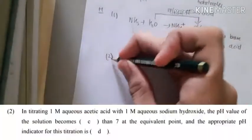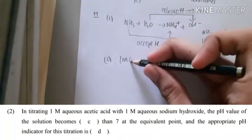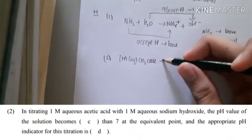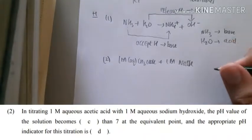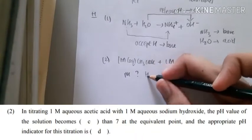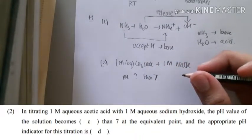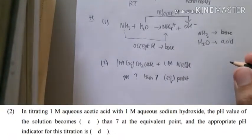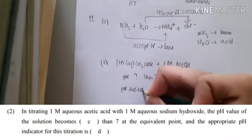Now for number 2, in titrating 1 molar of aqueous acetic acid with 1 molar of aqueous sodium hydroxide, the pH value of the solution will become what? Then 7. So I think it's a comparison to compare at the equivalent point and the appropriate pH indicator for this titration.